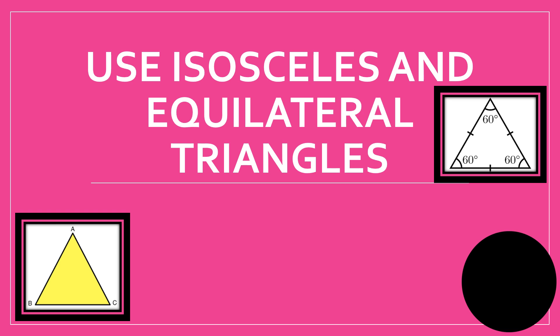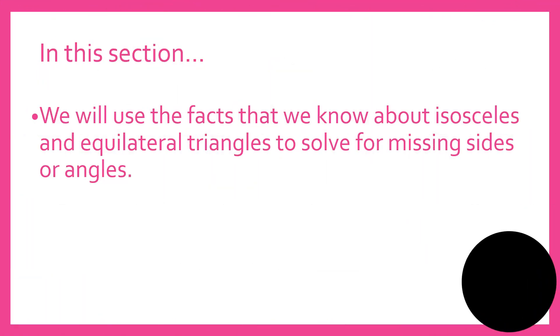Our lesson for today is about using isosceles and equilateral triangles to solve unknown parts. In this section, we will use the facts that we know about isosceles and equilateral triangles to solve for missing sides and angles.